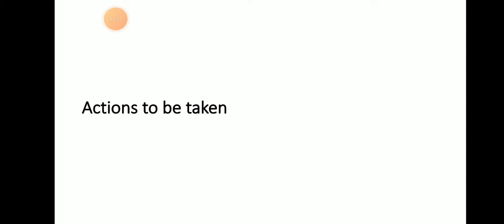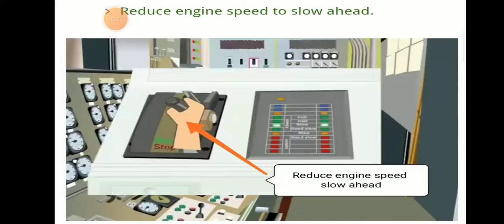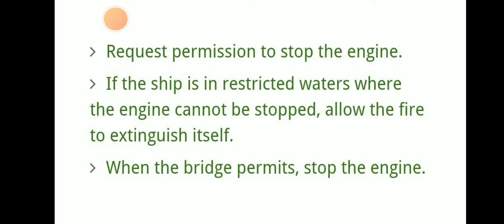When a scavenge space fire alarm occurs, the first action is to inform the bridge and the chief engineer. Then prepare to reduce engine RPM — reduce engine speed from full ahead to slow ahead. After this, increase the cylinder oil supply but stop the fuel oil supply. Cylinder oil supply must not be stopped; only fuel oil supply should be stopped.